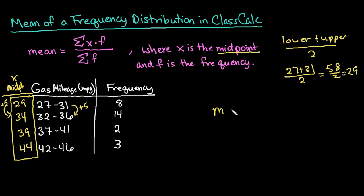So instead of having to go through and finding the product of 29 and 8, 34 and 14, 39 and 2, 44 and 3, and then finding the sum of those products and then dividing by the sum of the frequencies, I can just plug it into ClassCalc to help me get the answer.